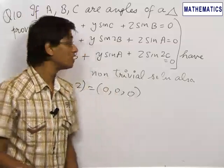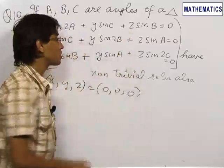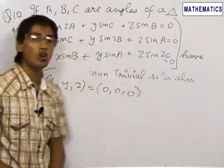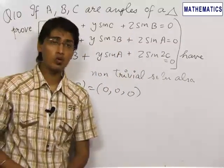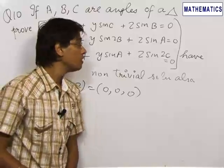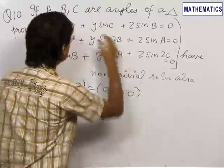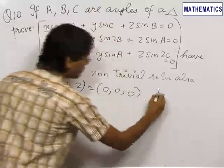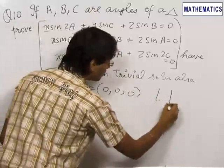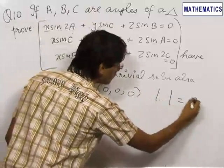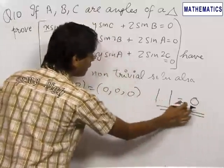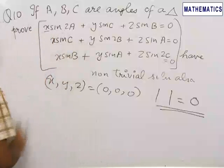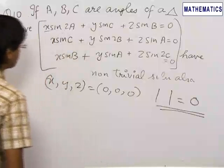In order to prove that these three equations, apart from this trivial solution, have a non-trivial solution also, we need to prove that the determinant of the coefficient matrix comes out to be equal to 0. If the determinant value is 0, then this system has a non-trivial solution.